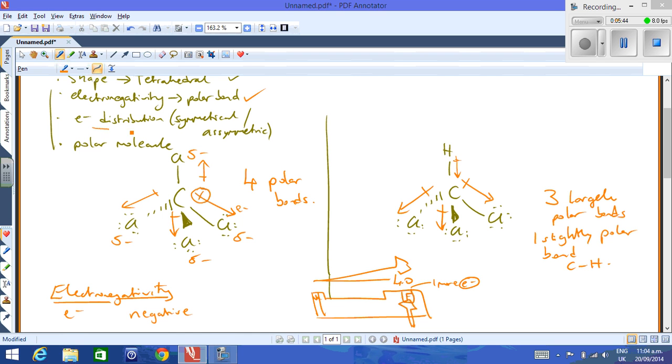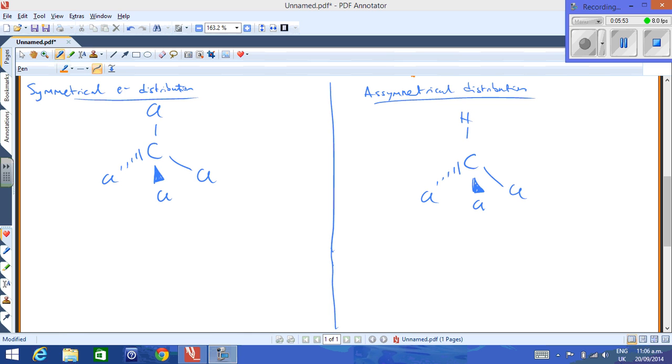Well, if we look at electron distribution now in terms of if it's symmetrical or not, then students find this difficult to understand. So I'll explain it as best I can now. So I've redrawn the two molecules here. And we're going to talk about symmetrical or asymmetrical electron distribution. In the CCl4, we have an area of electron density down here, here, here, and up the top.